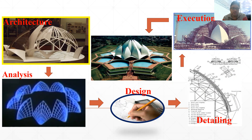To develop the concept, the architect makes models and finalizes the form of the building. He designs how much space it will occupy and how much space each element will take. After finalizing the shape and form, he produces architectural drawings.